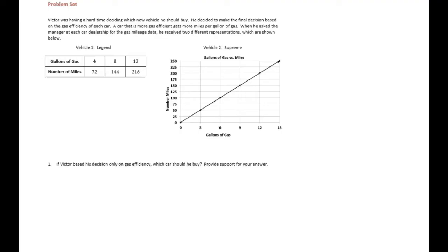Sixth grade module 1 lesson 19 problem set. Victor was having a hard time deciding which new vehicle he should buy. He decided to make the final decision based on the gas efficiency of each car. A car that is more gas efficient gets more miles per gallon of gas. When he asked the manager at each car dealership for the gas mileage data, he received two different representations which are shown below: vehicle one, a Legend, vehicle two, a Supreme. If Victor based his decision only on gas efficiency, which car should he buy? Provide support for your answer.